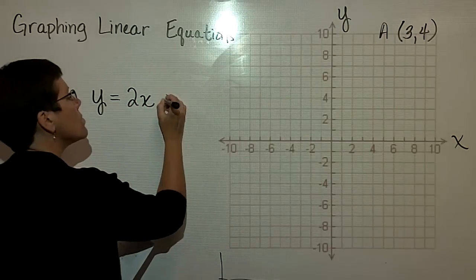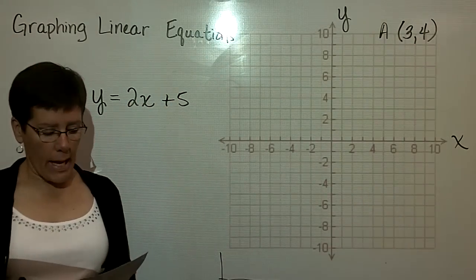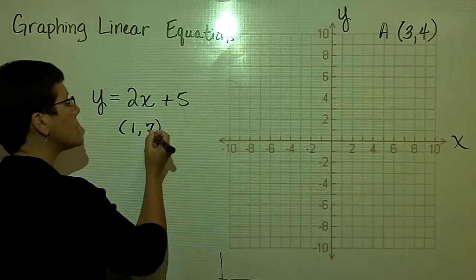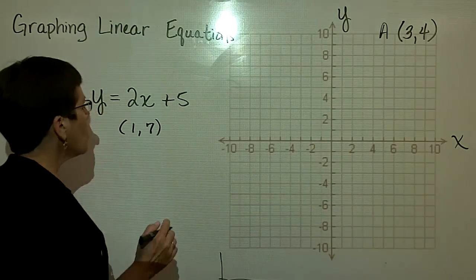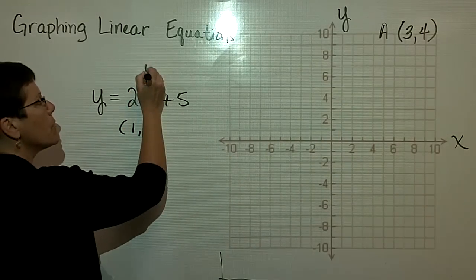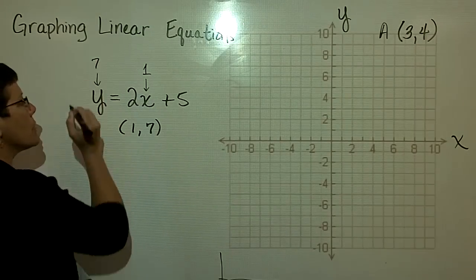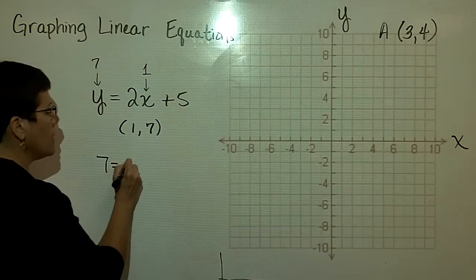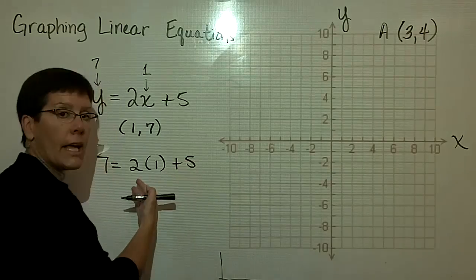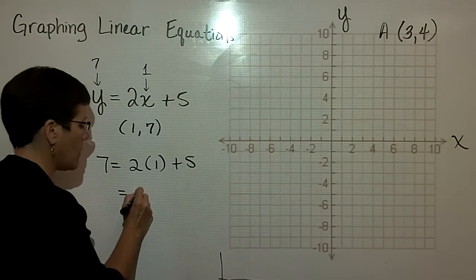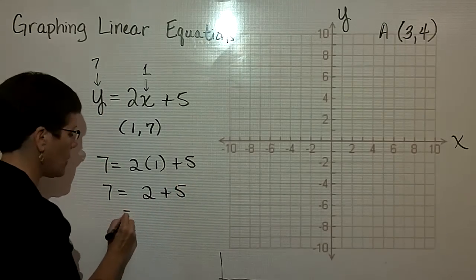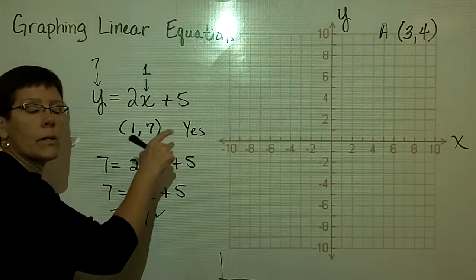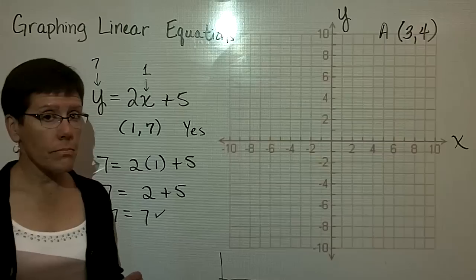Let's say you have the linear equation y = 2x + 5. I ask you to find out if the ordered pair where x = 1 and y = 7 is a solution. You substitute 1 for x and 7 for y: 7 = 2 times 1 plus 5. Using order of operations, multiply first: 2 times 1 is 2, then add 5 to get 7. That is a true statement, so yes — when x = 1 and y = 7, that is a valid ordered pair for this linear equation.